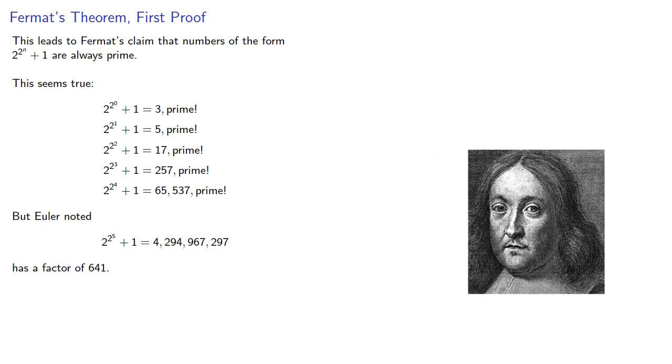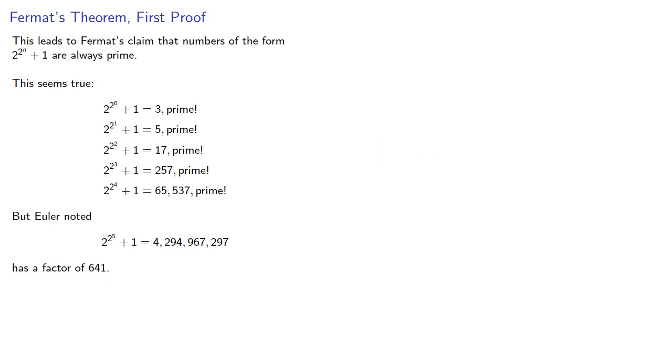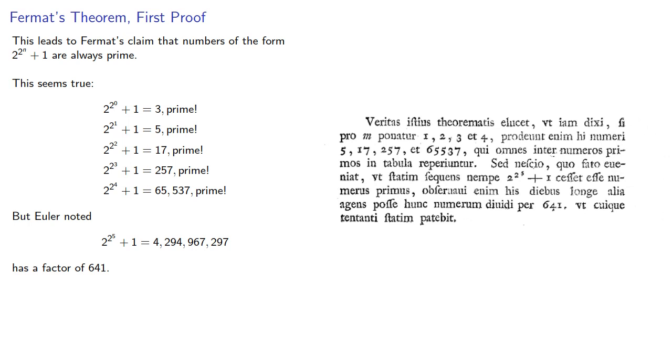One important feature of this paper of Euler is that it followed Fermat's practice of presenting results without really explaining where they came from. In particular, in this case, Euler didn't explain how he found this factor of 641, but merely hinted that he had a more general method.